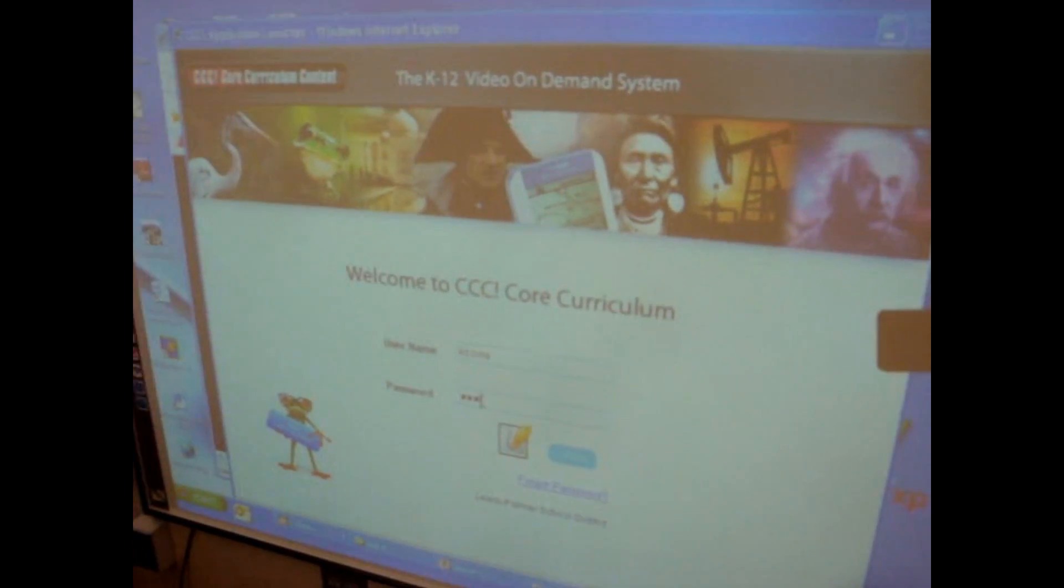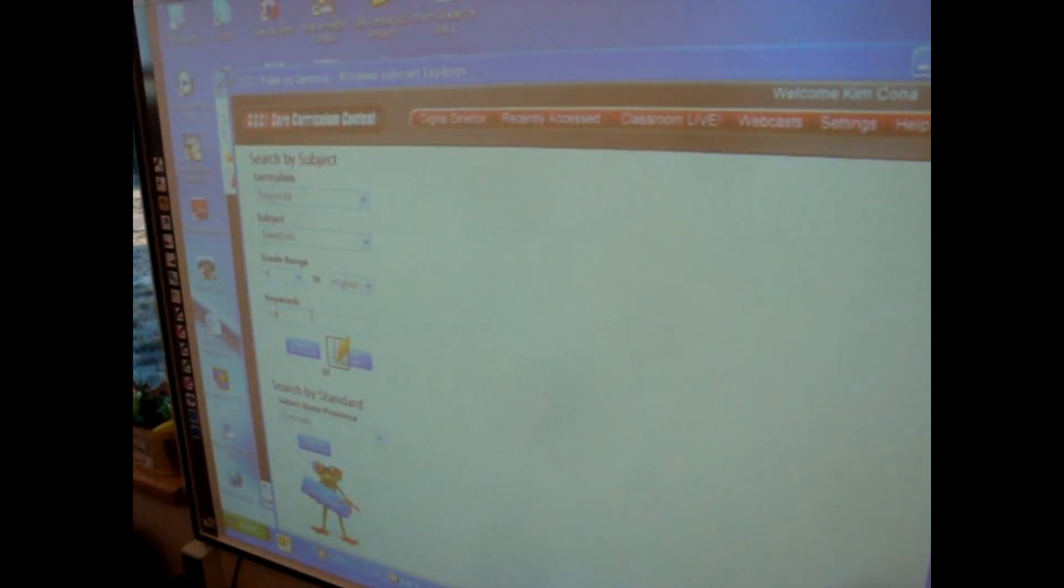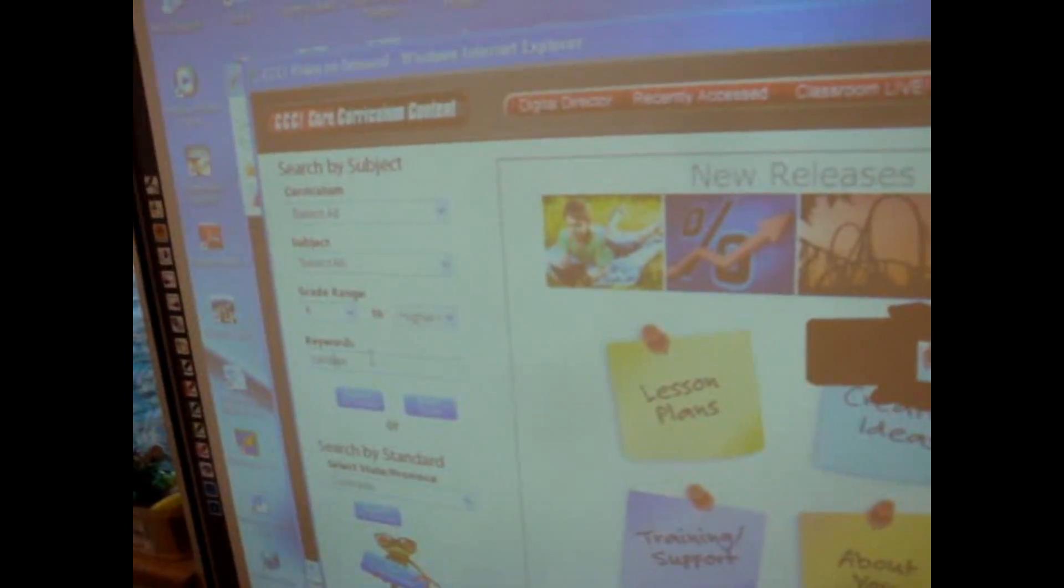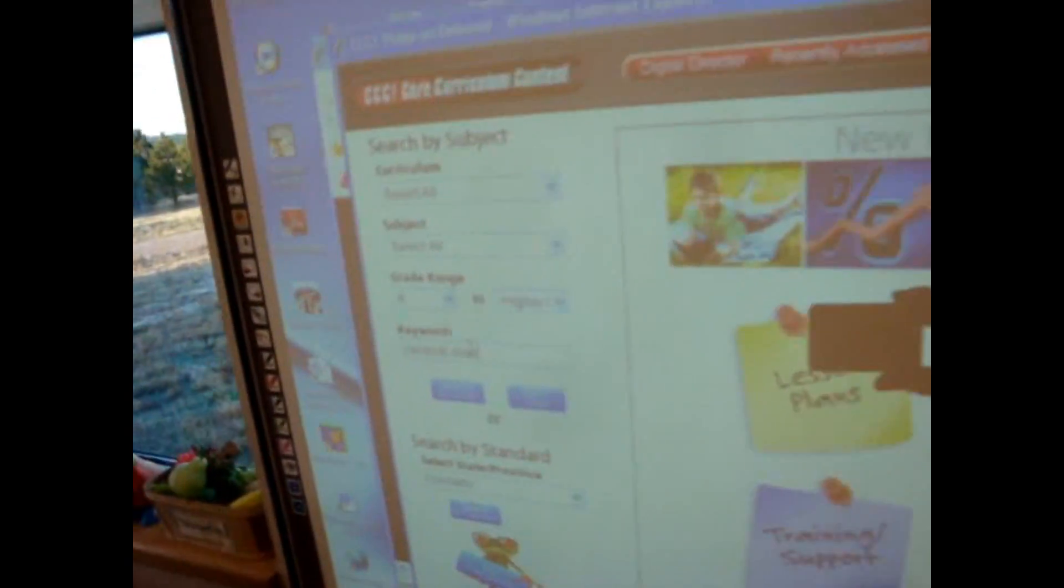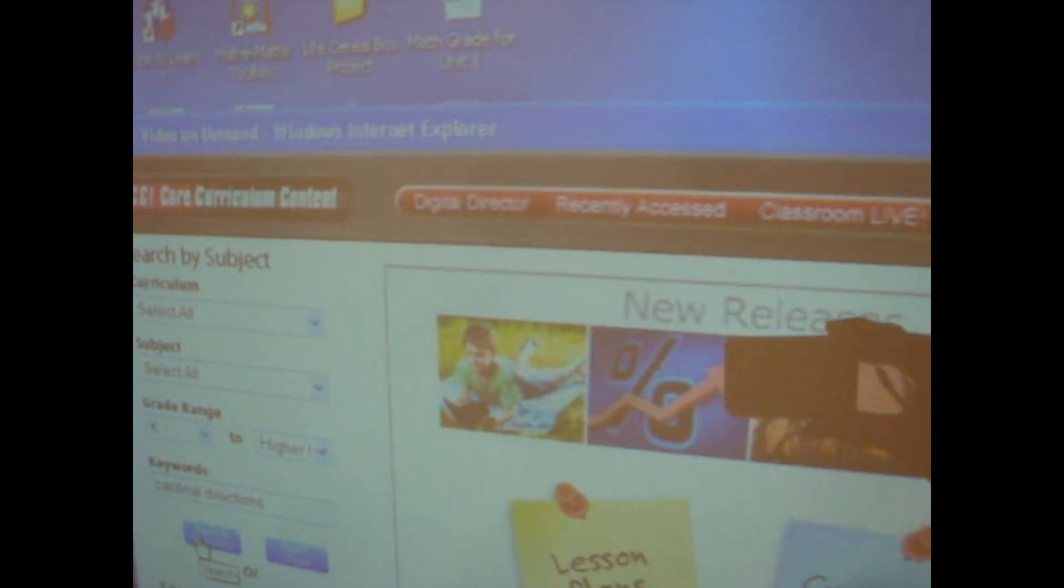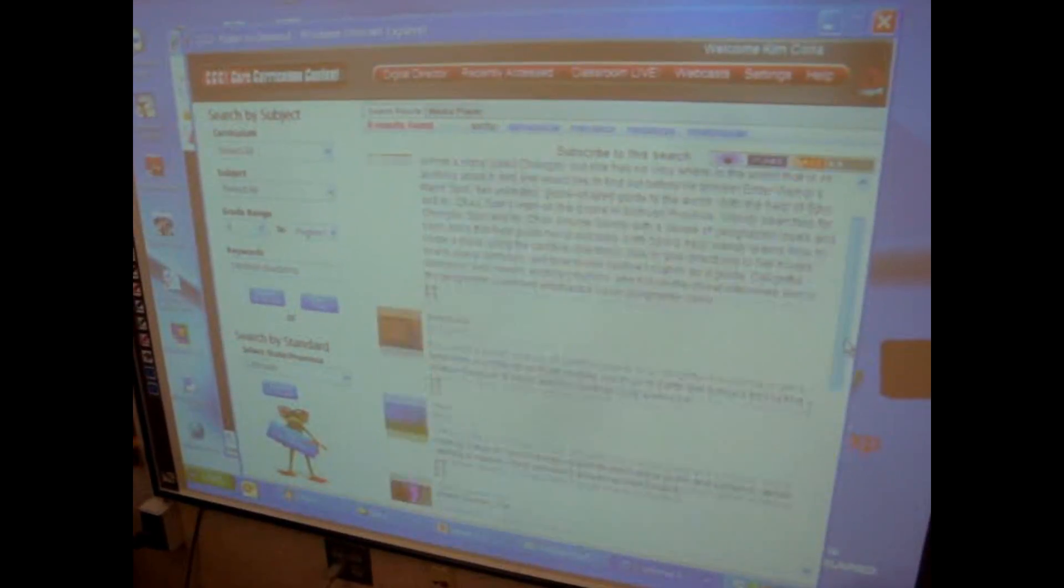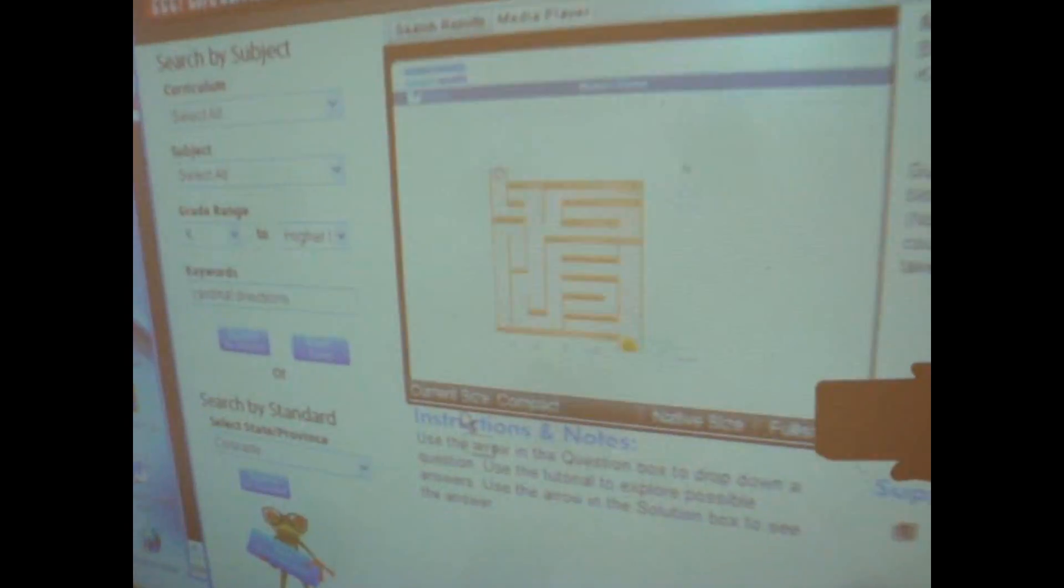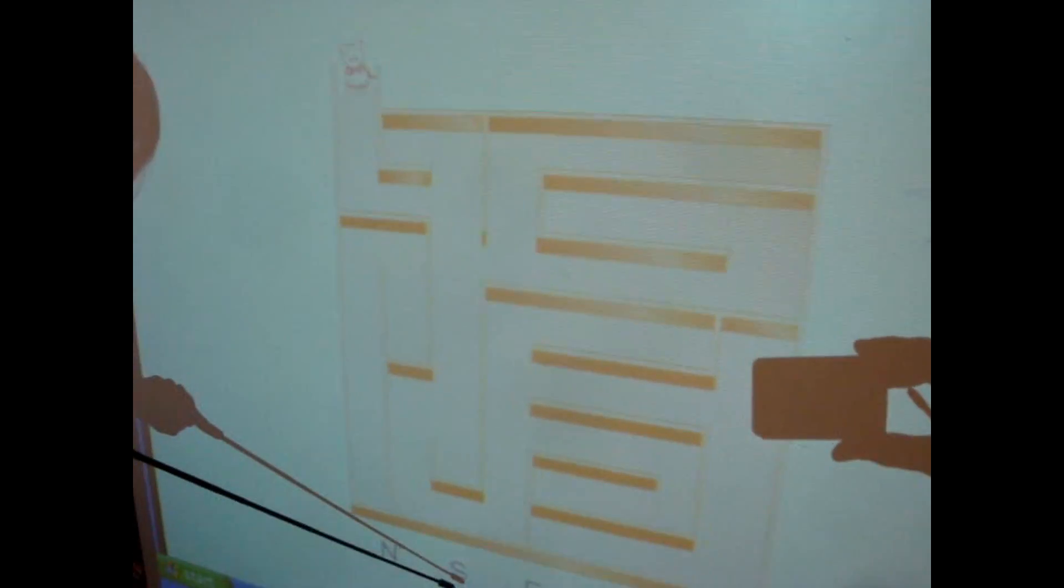When I was observing her class, she was actually teaching the kids about cardinal directions. This particular one was called Mouse and Cheese. So she's going to make this full screen. I have the kids on their slates as they're watching, tell me which direction that the mouse has to travel. Then they direct the mouse and I either have a student or myself tap the correct cardinal direction.